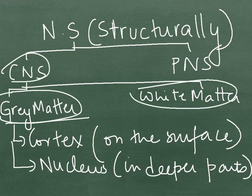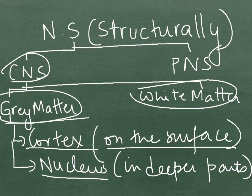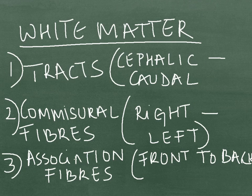The grey matter consists of the cortex or it can also consist of the nucleus. The cortex refers to the collection of grey matter on the surface of the CNS, while the nucleus refers to collections of grey matter in the deeper parts of the CNS.